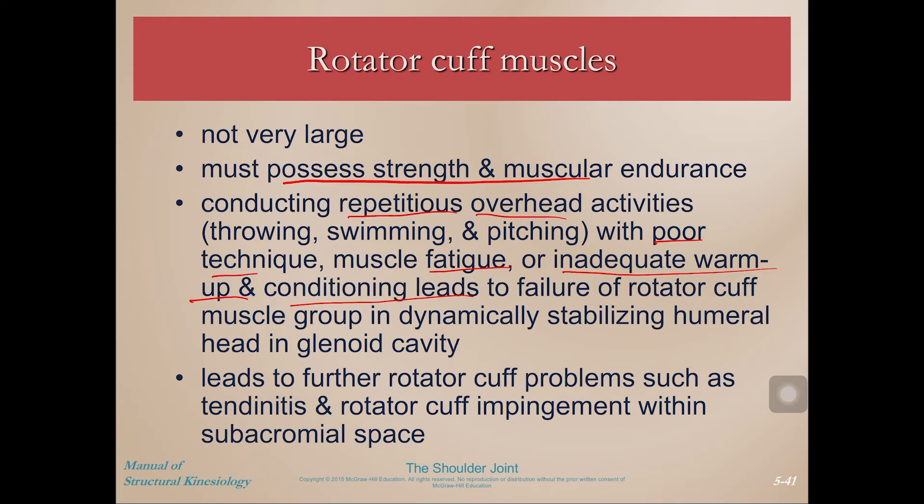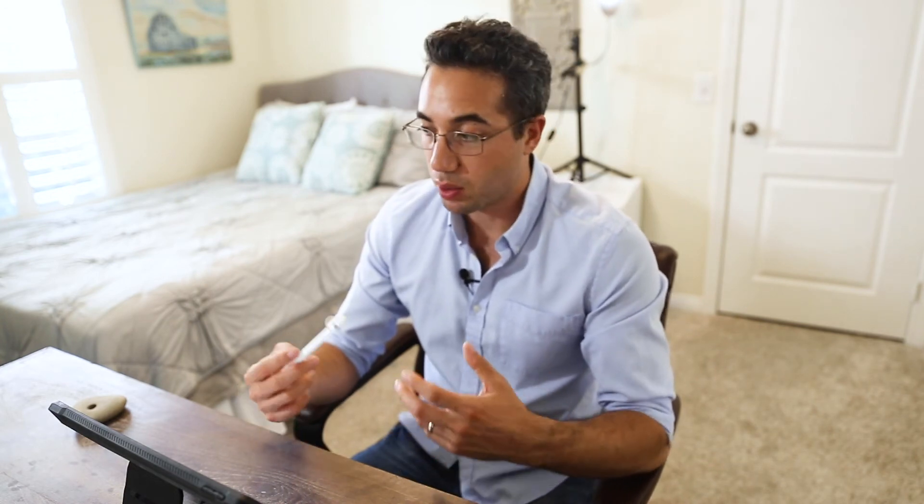These muscles are not very large, but they must possess strength and muscular endurance to keep holding the humeral head in place, especially during repetitive, high-velocity, and high-force movements. Conducting repetitive overhead activities with poor technique, fatigue, inadequate warm-up, or inadequate conditioning can lead to failure of the rotator cuff — it will stop dynamically stabilizing the humeral head. This can cause chronic or even acute catastrophic damage. It's super important to maintain rotator cuff health through some sort of strengthening or prehab routine, especially if you're not regularly doing upper-extremity strength-based activities.